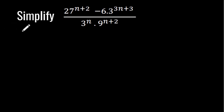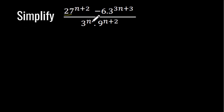Hello, welcome to Powerland Times and Mass TV. In today's video we are going to simplify an algebraic expression. To do this we are going to express 27 and 9 with a base of 3.